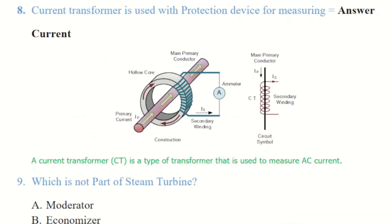Moving to the question number 8. Current transformer is used with protection device for measuring. Answer is current. Obviously a current transformer is a type of transformer that is used to measure AC current.